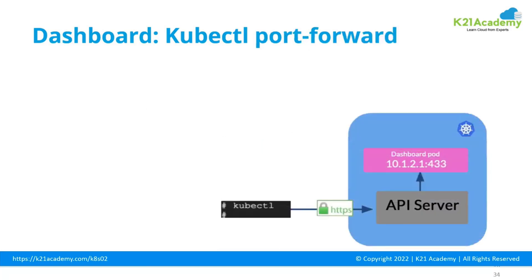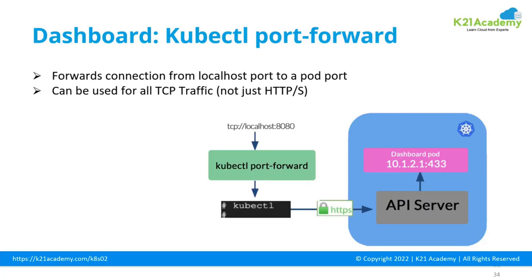The other method of accessing the dashboard is kubectl port-forward. In this case you can access it not just over HTTP or HTTPS but also over TCP. As the name suggests, it's port forwarding — you access a URL again limited to the kubectl host only. You type TCP localhost on whatever port number you've configured for port forwarding. That forwards the request to the Kubernetes API server, which in turn forwards it to the dashboard port. This is kubectl port-forward.